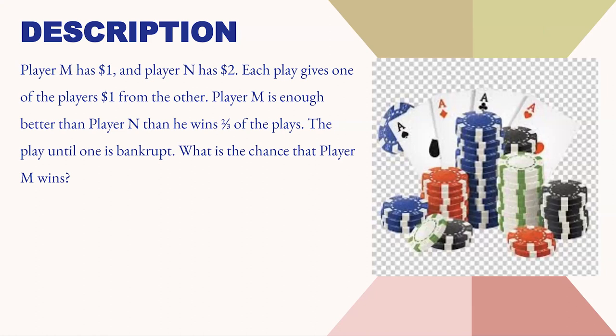Now let's see the solution to the problem. We have two players M and N. M has $1 and N has $2. After each game, the person who wins will get $1 from the other person, and this game continues until either of them becomes bankrupt. The probability of M winning is 2/3 and the probability of N winning is 1/3. We need to calculate what is the chance that M wins, that is, N becomes bankrupt.